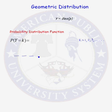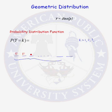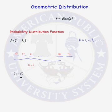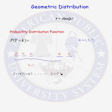Let's represent our trials as different dashes. What do we know about every trial prior to the last trial? All of the first k minus 1 trials must be failures because the first success occurs on the kth trial. So what is the probability of observing k minus 1 failures? Well, the probability of a single failure is 1 minus p because the probability of success is p. Because the trials are independent, we can multiply these probabilities.